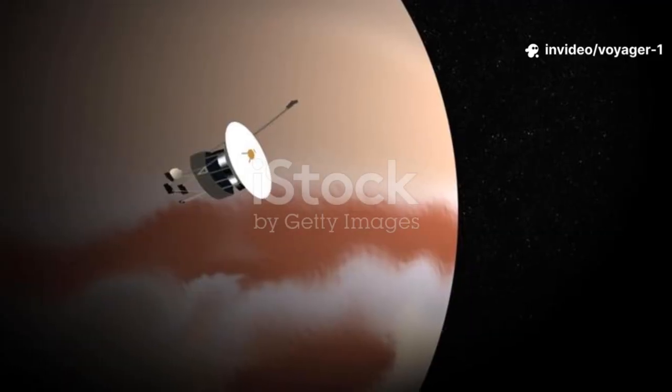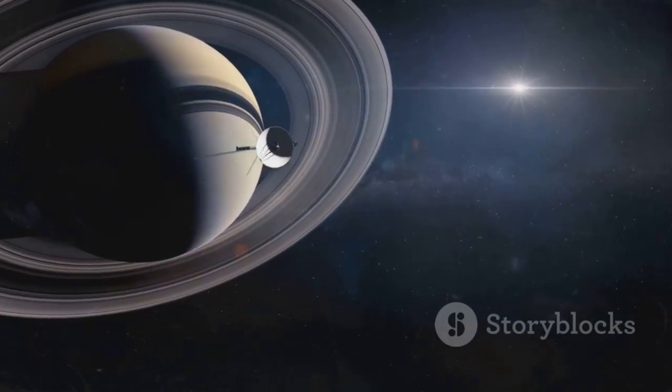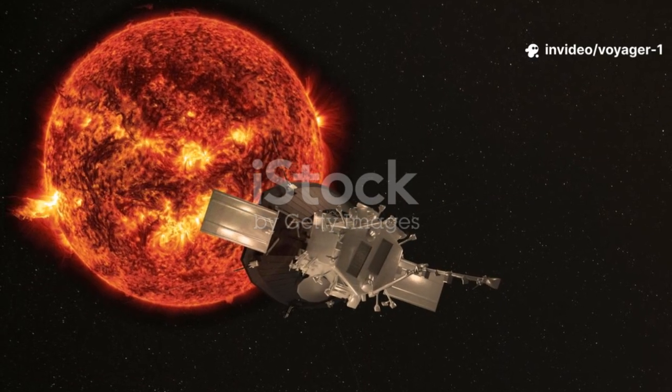This wind creates a huge, protective bubble around our entire solar system. We call this bubble the heliosphere. It's our home. It's the region of space dominated by our sun.